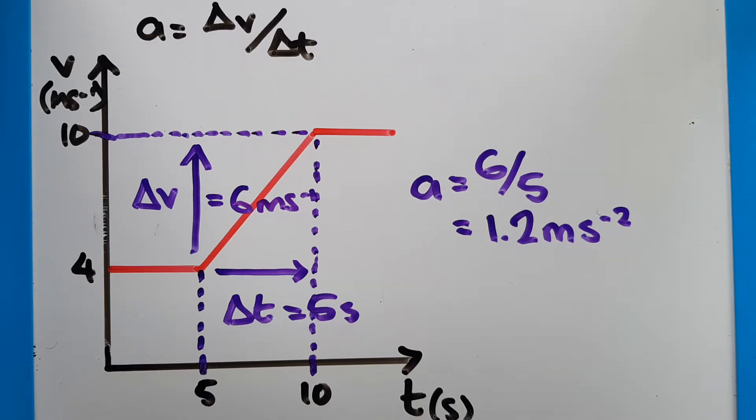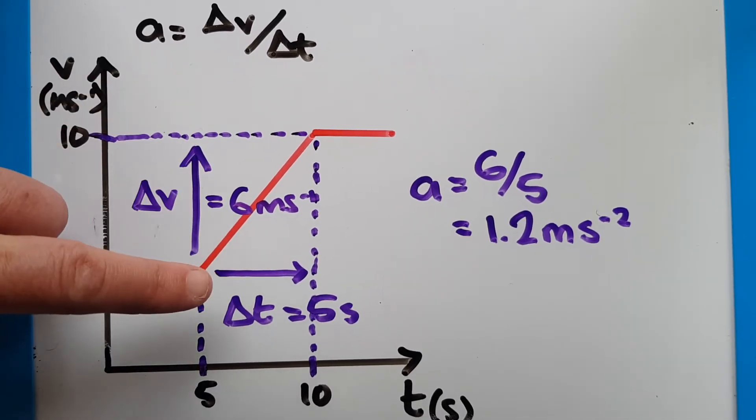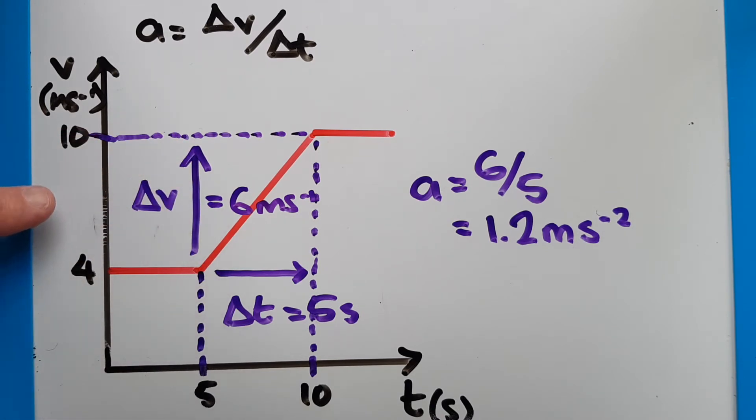For that we go six meters per second is the change in speed. So ten minus four, that's the difference in speed. Divided by five seconds, the difference in time, ten minus five. And six divided by five is 1.2. And because it's acceleration, our unit is meters per second per second, or ms to the power of negative two.